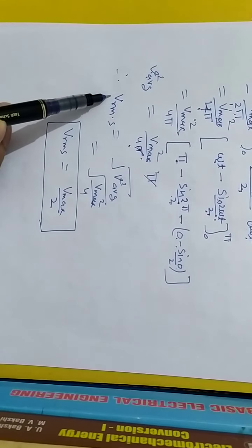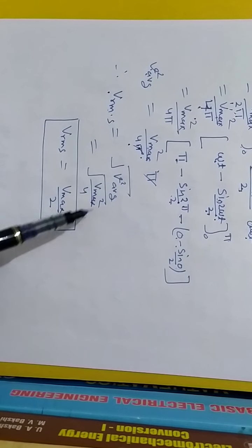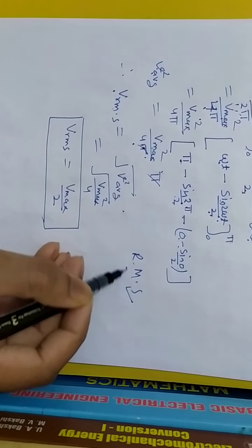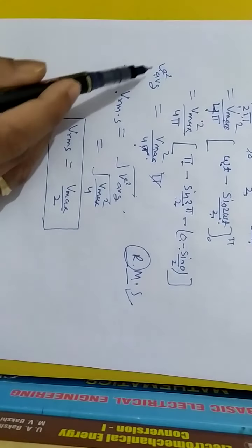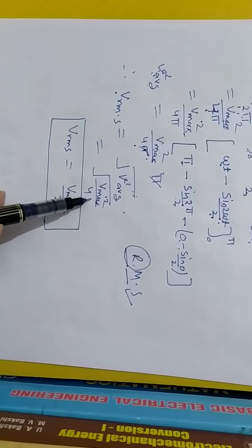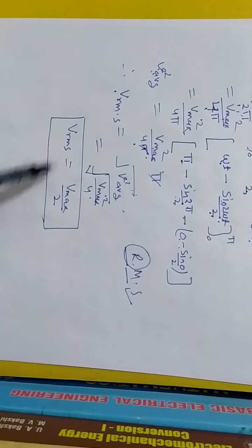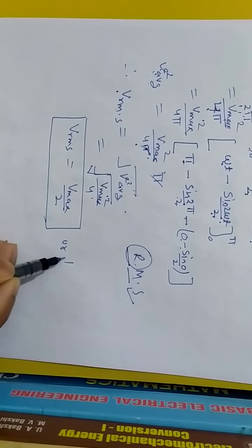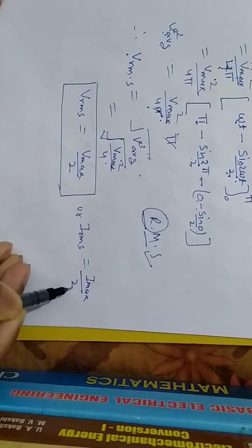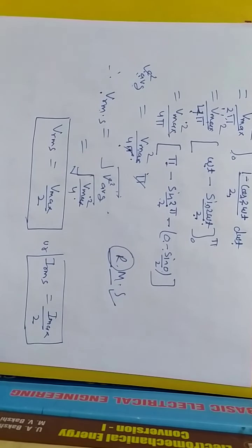Finally, V_rms = √(V²_avg) = √(Vmax²/4) = Vmax/2. Similarly I_rms = Imax/2. This is how you calculate the RMS and average value of a half wave rectifier. In the next video I will calculate the RMS and average value of the full wave rectifier. Thank you.